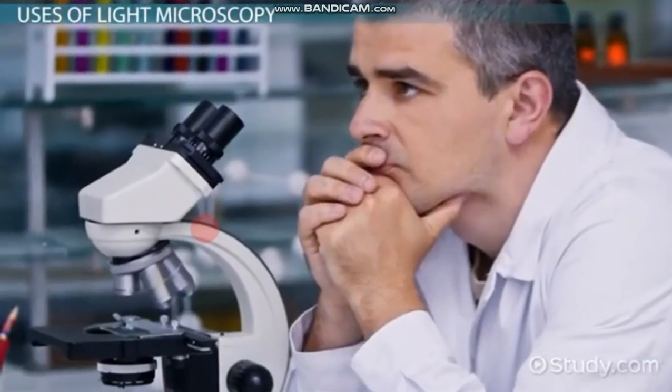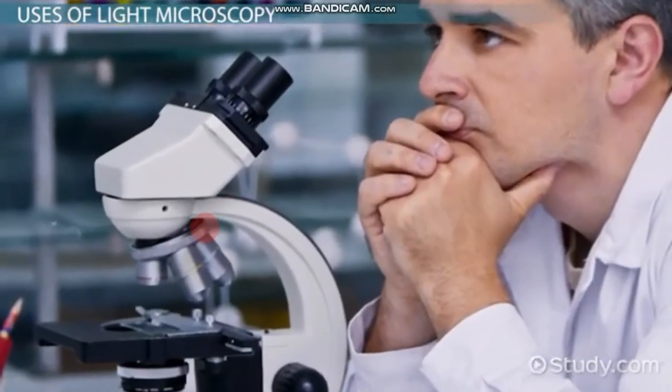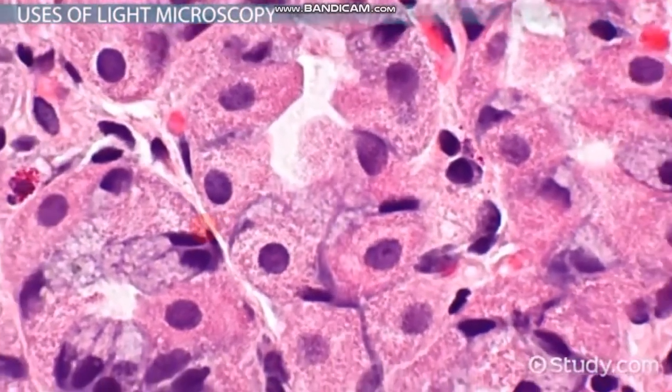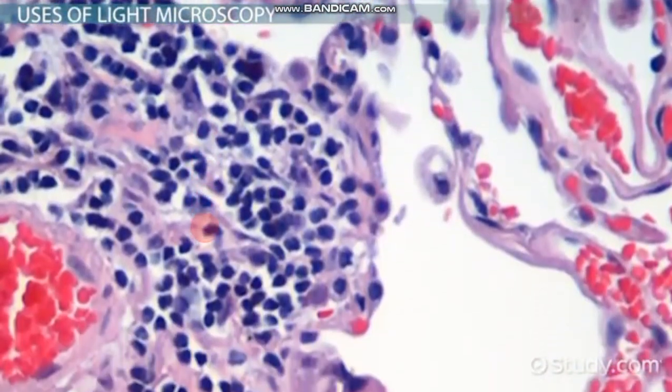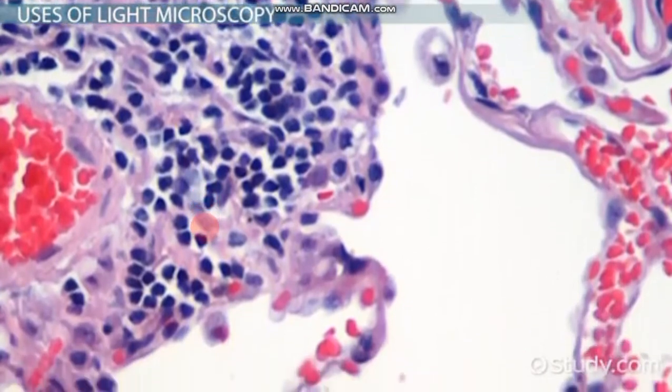Microscopes are essential tools for scientists. They are used in microbiology, material science, mineralogy, and medicine. A combination of staining and light microscopy can allow scientists to identify different kinds of bacteria.